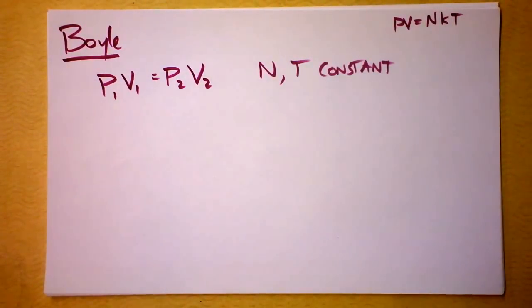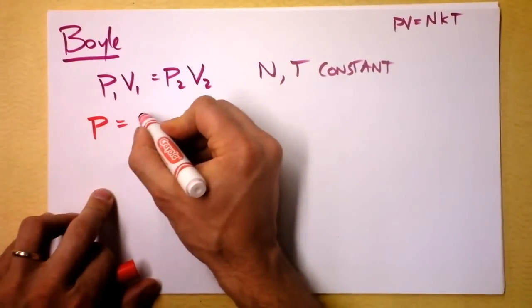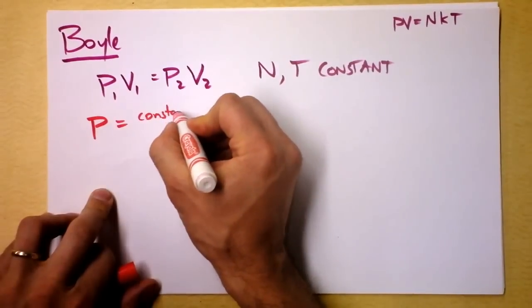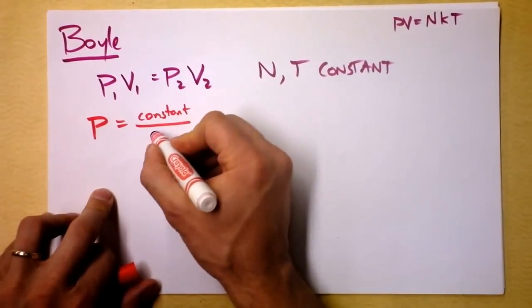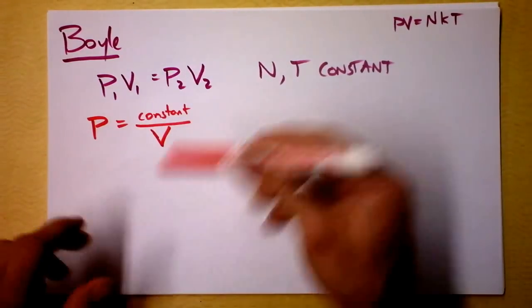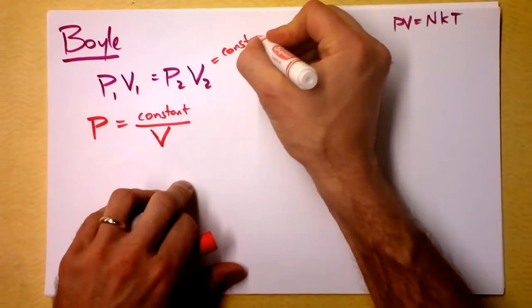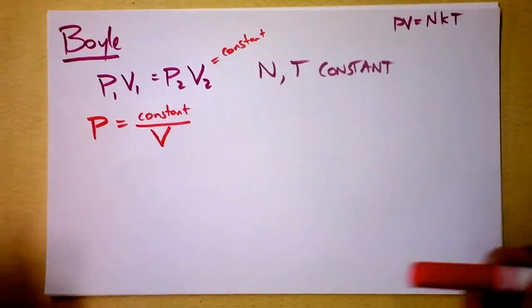So this actually gives us the fact that pressure is some constant, which he didn't really know, and he worked on it a little bit, divided by volume. If we say that this is the constant, equals some constant. He found those things were constant.